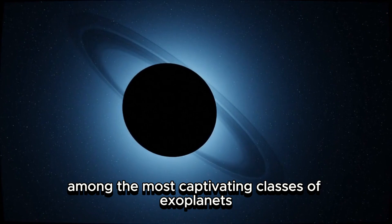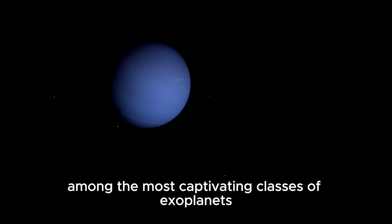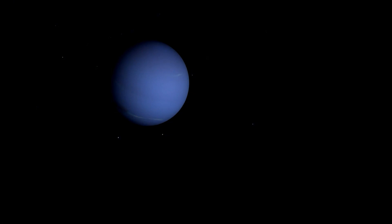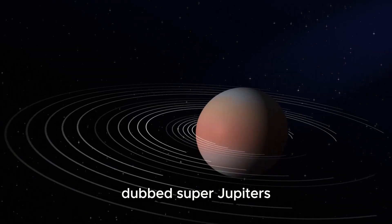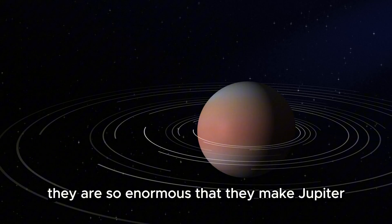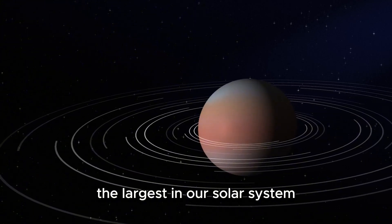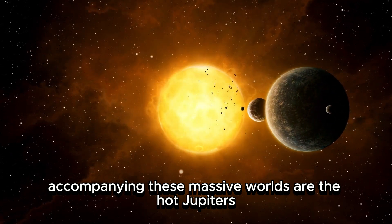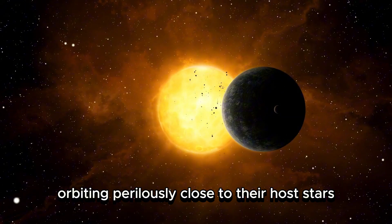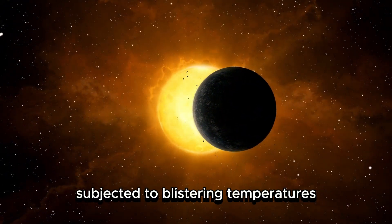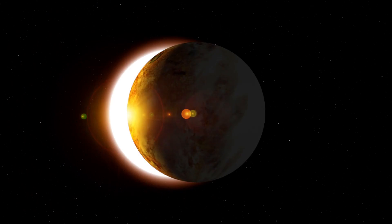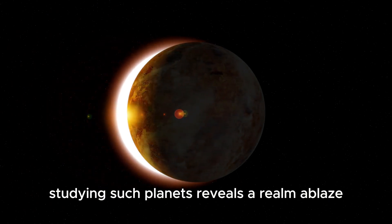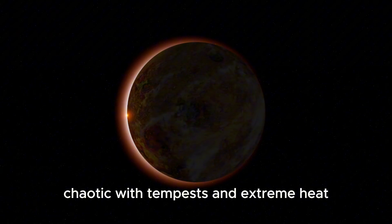Gas giants are perhaps among the most captivating classes of exoplanets, enthralling astronomers around the world. These planets, similar in structure to Jupiter and Saturn, frequently dwarf them in size. Dubbed super-Jupiters, they are so enormous that they make Jupiter, the largest in our solar system, appear relatively small. Accompanying these massive worlds are the hot Jupiters, gas giants orbiting perilously close to their host stars, subjected to blistering temperatures capable of liquefying metal. Studying such planets reveals a realm ablaze, chaotic with tempests and extreme heat.